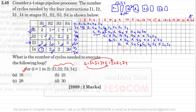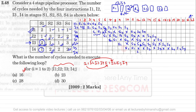Instruction I3 can enter stage S1 only at the tenth clock cycle, and takes two clock cycles there — occupying S1 at cycles 10 and 11. Then I3 requires one clock cycle in S2, one clock cycle in S3, and three clock cycles in stage S4, finishing at clock cycles 19, 20, and 21.